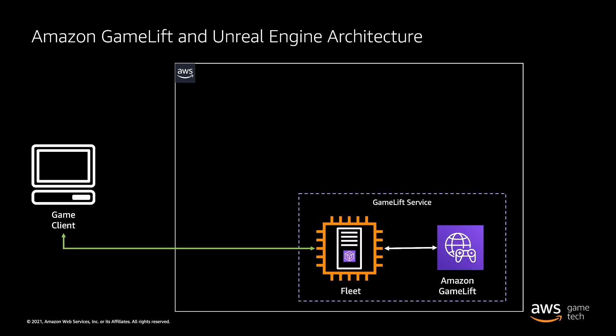We will then be using Amazon GameLift to host that server build as well as manage our game server fleet. This will allow our clients to connect to the GameLift service and get connection information — specifically the IP address and port of a server that has availability to start a game. Then the game client will be able to make a connection to the game server and start a game session.